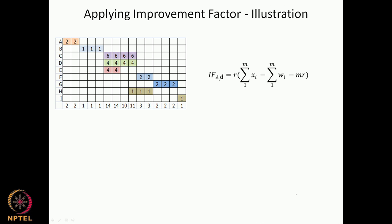Let us take this into an application exercise. Here we have the resource profile shown, and this is our same exercise where D can be shifted, H can be shifted, and E can be shifted. The other activities are critical, and here is our improvement function formula again. Let us try to apply this in this particular case. This is our existing resource profile before the shift.